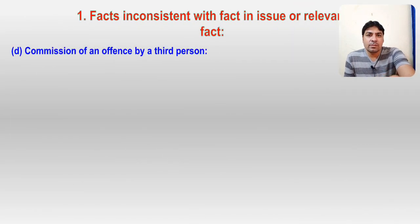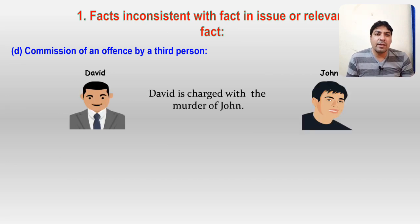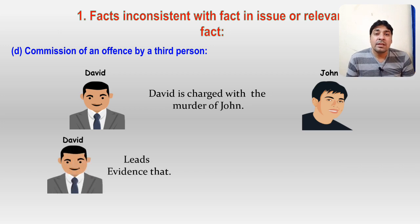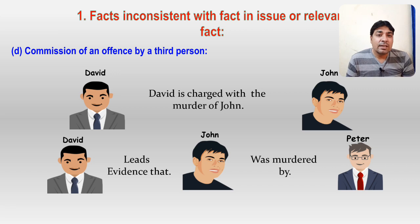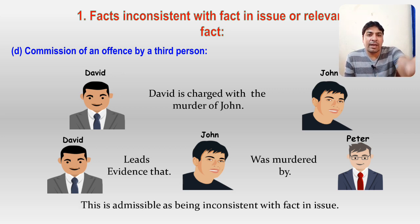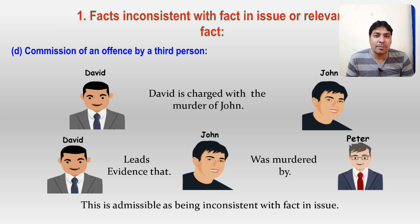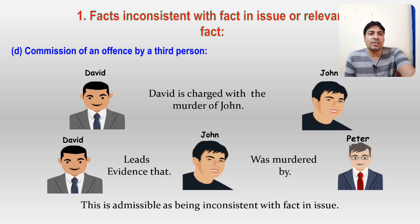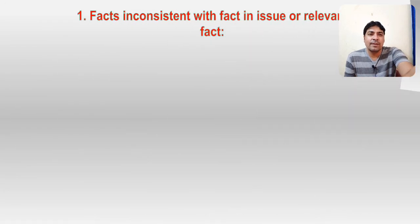Another example is commission of an offense by a third person. David is charged with the murder of John, but David leads evidence that John was murdered by Peter, not by himself. This is admissible as being inconsistent with the fact in issue. Both facts become relevant under Section 11 on the basis of inconsistency between them.